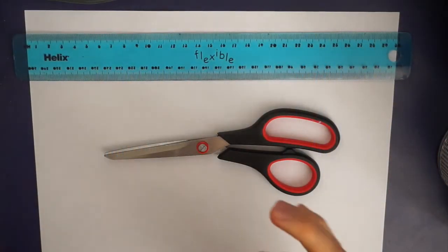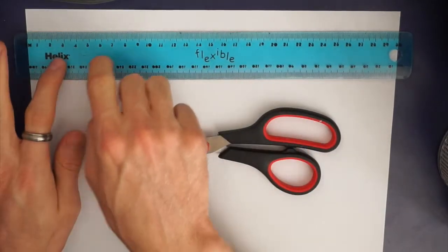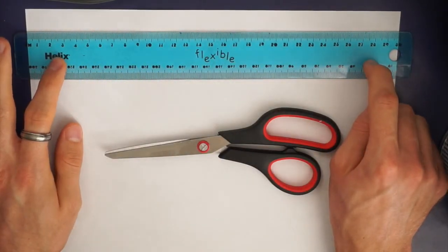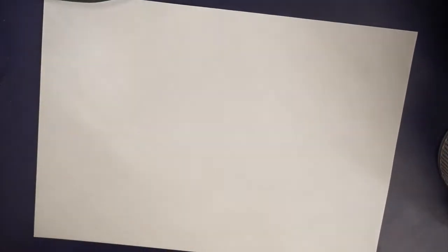Okay so for our project today you're going to need a piece of paper, some scissors and a ruler if you've got one would be helpful today but you don't need one. So start off how we always do turning your A4 piece of paper into a square.